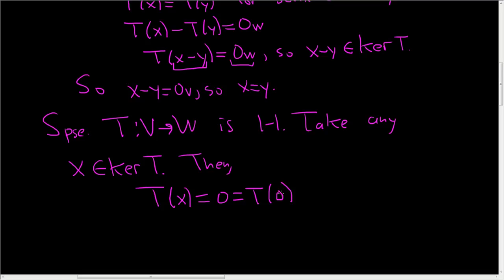Now, it's worth emphasizing here, this is the zero vector in V. This is the zero vector in W. But wait a minute, we have T of X equal to T of zero. So X must be zero, because T is one-to-one. So that means that the kernel of T is the set containing just the zero vector. So that's it. That's the proof. It's worth knowing how to do this one on your own, for sure.